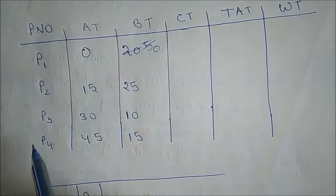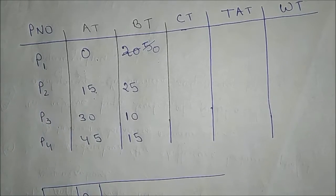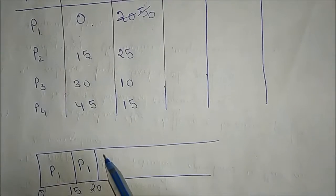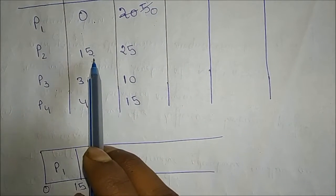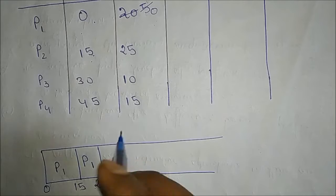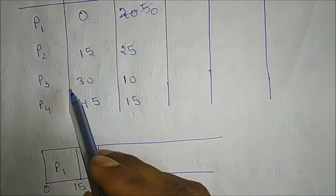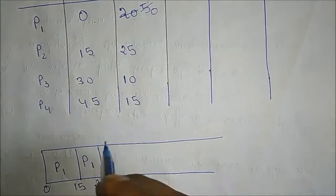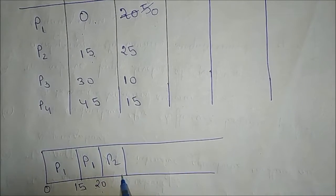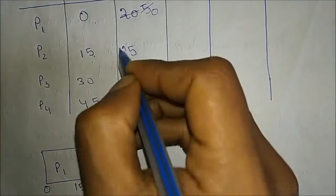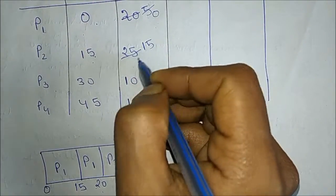Now only P2 is available because P3 arrives at 30 and we are only at time 20. So P2 runs next. P2 runs up to time 30, which is the next arrival time of P3, running for 10 units. After this, P2 has 15 units remaining (25 minus 10 = 15).